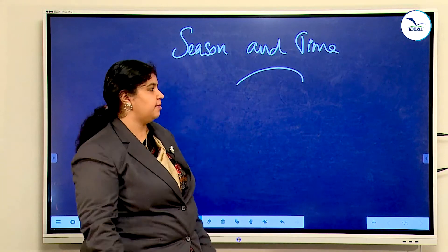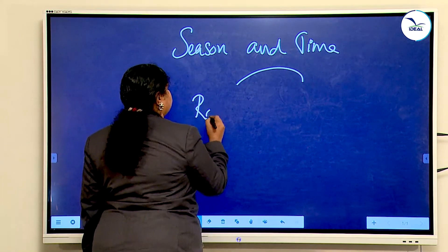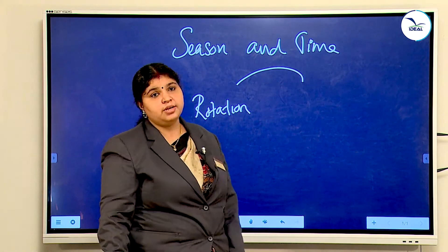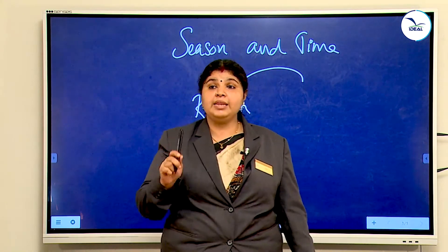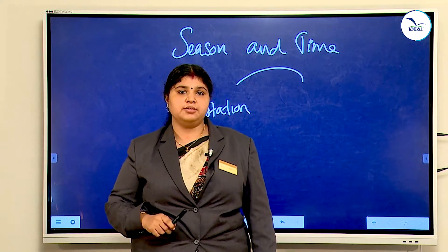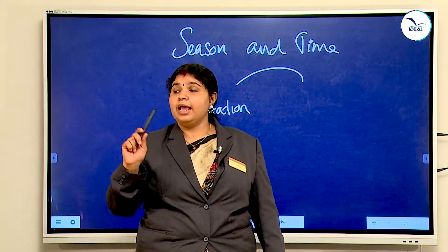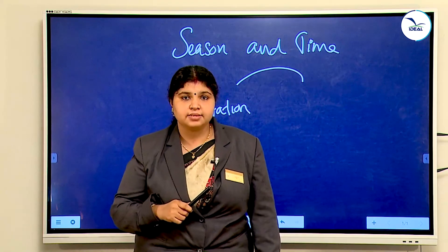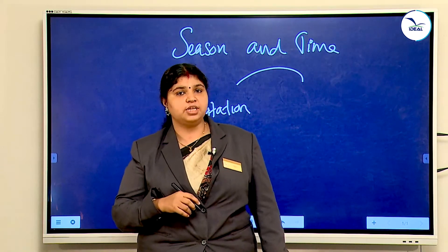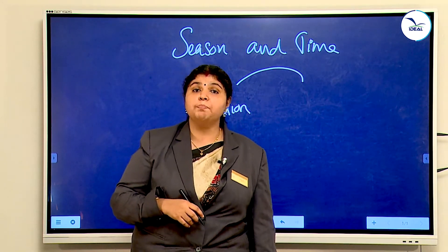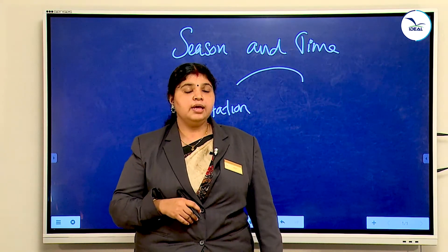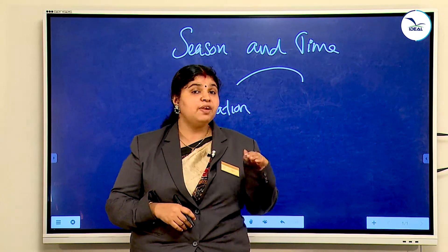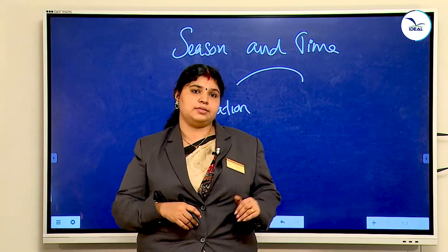We want to start from rotation. What is rotation? The movement of earth in its own axis is called rotation. Along with revolution, the earth moves in its own axis — that is called rotation. Earth takes 24 hours to complete one rotation. Earth rotates from west to east, that is why we feel the sun rises in the east.